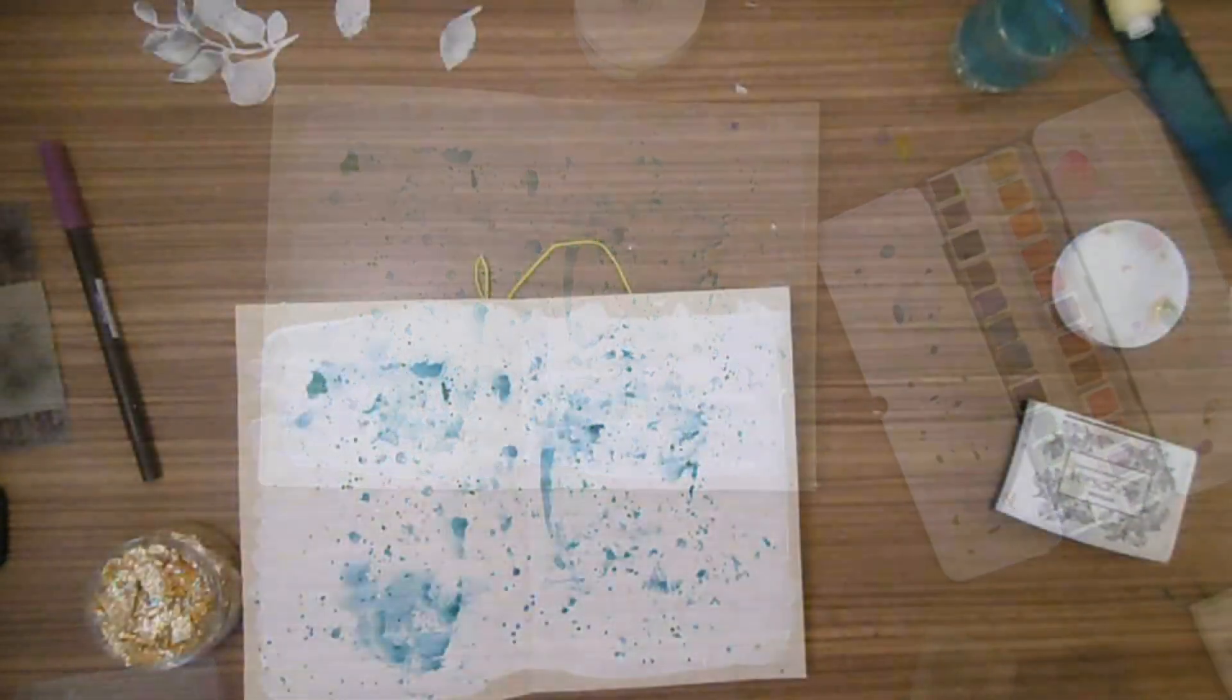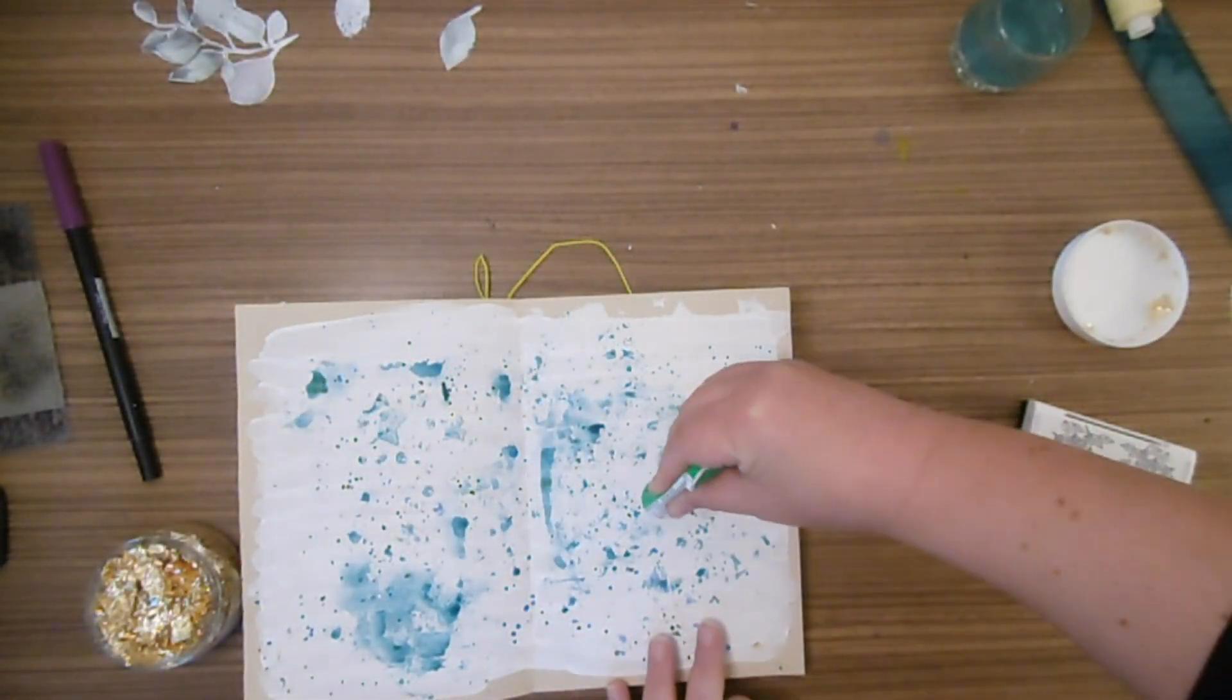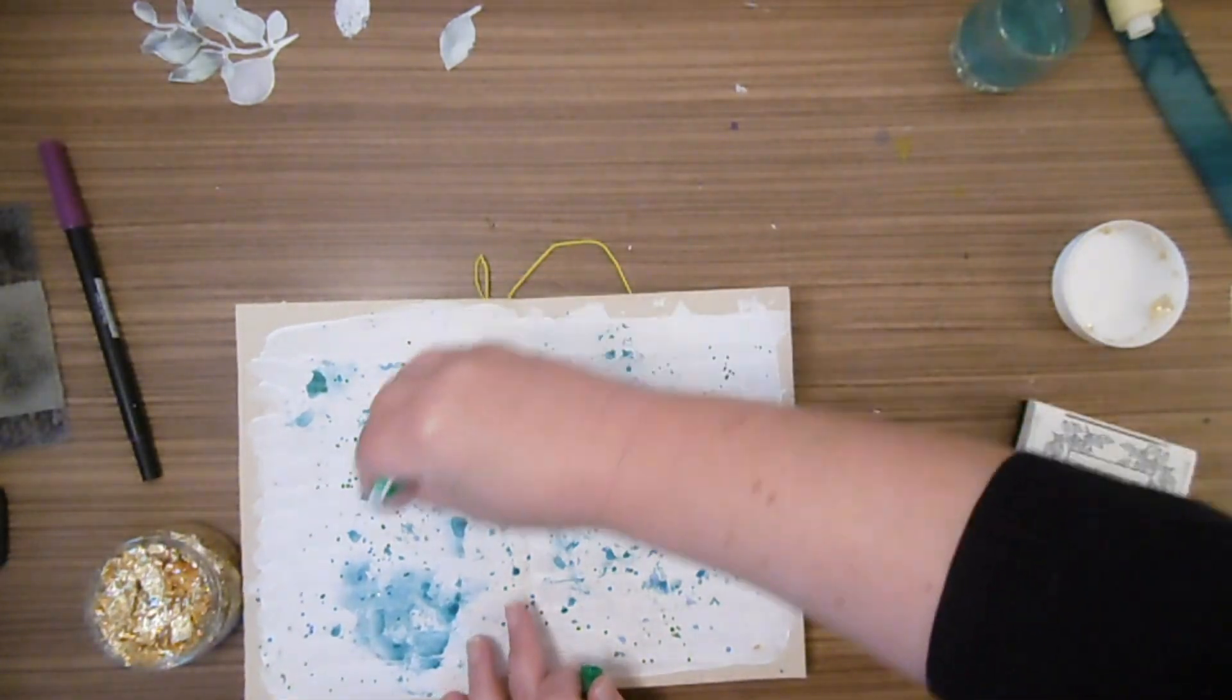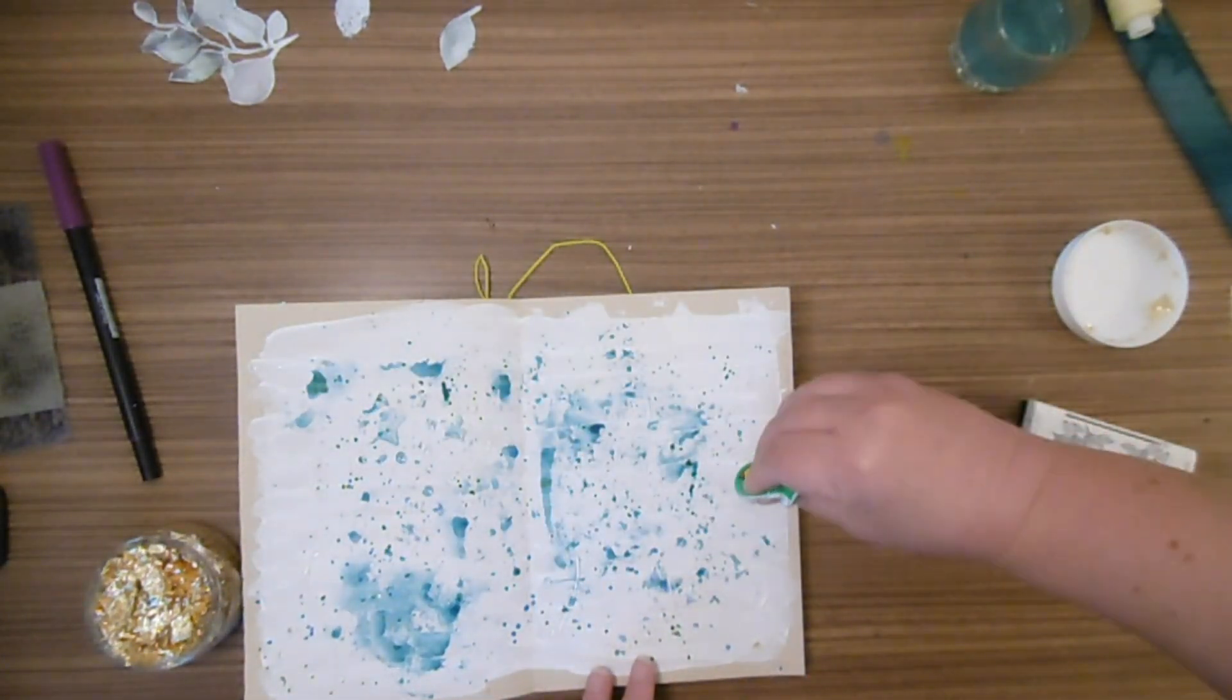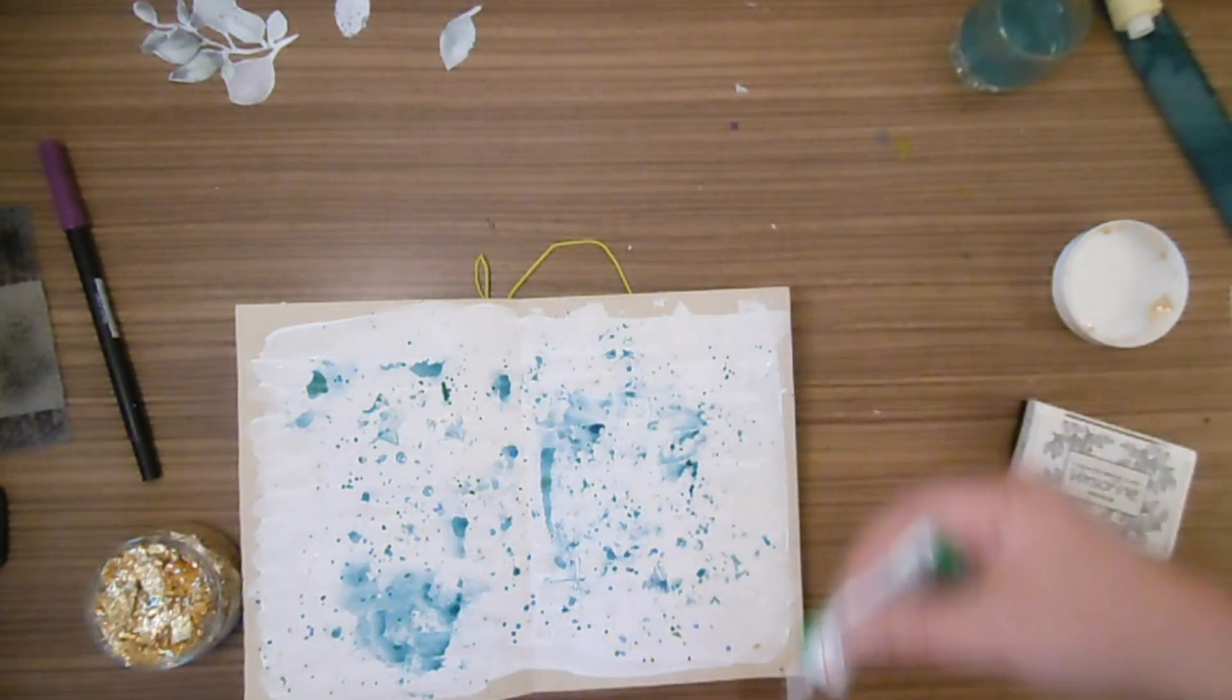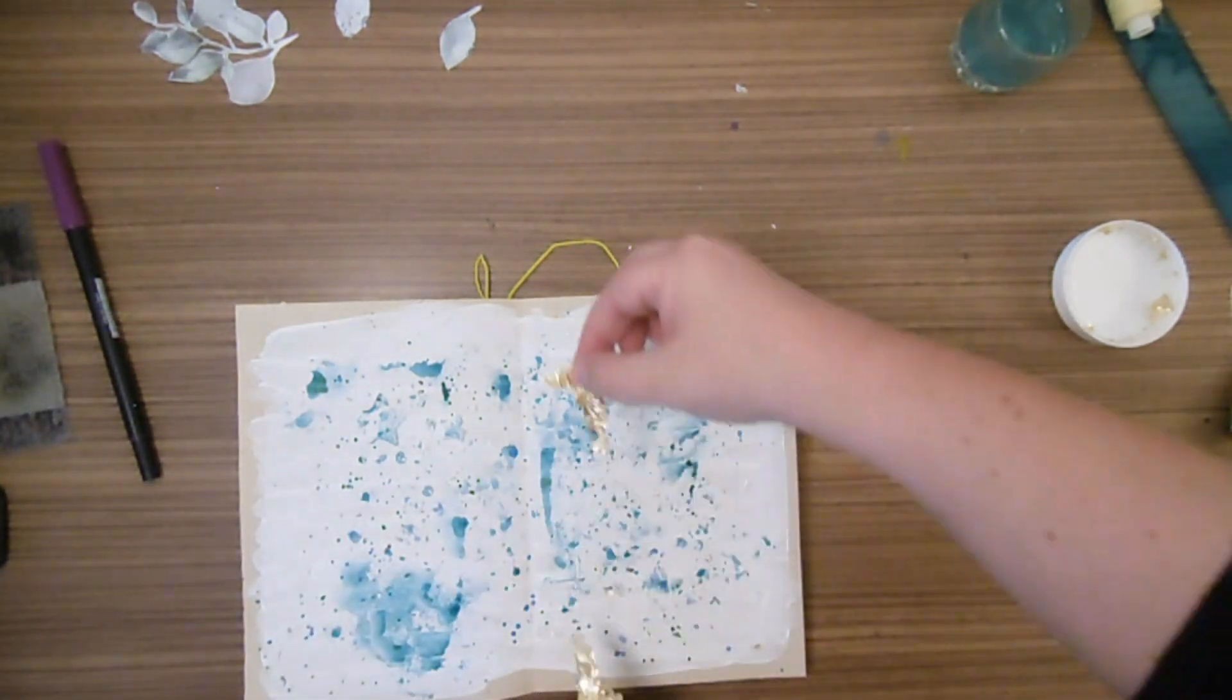J'attends que tout sèche bien. Et ensuite, nous allons passer à l'étape de la feuille d'or. Pour appliquer la feuille d'or, d'abord, la première étape est de mettre de la colle un petit peu partout.